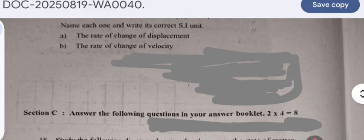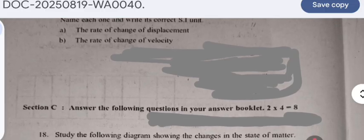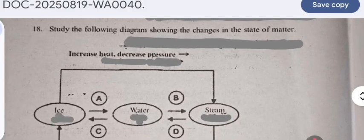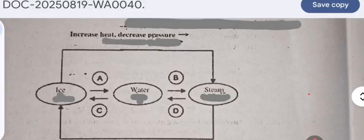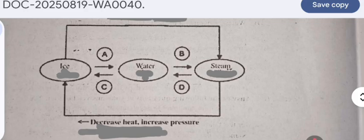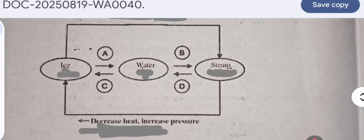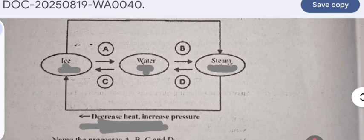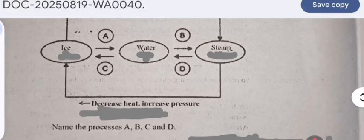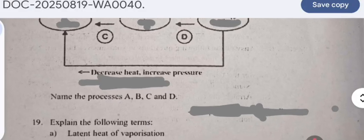Question 18: Study the following diagram showing the changes in the state of matter. With increase of heat shown towards the right side and decrease of heat and increase of pressure shown towards left side: ice to water, water to steam, steam to water, and water to ice. Name the processes A, B, C, and D. Question 19: Explain the following terms - latent heat of vaporization and latent heat of fusion.